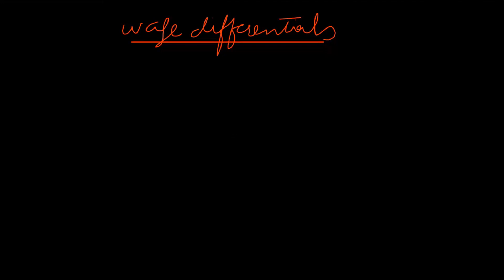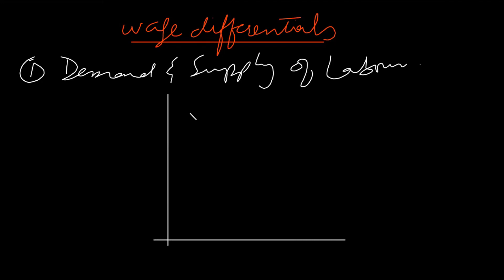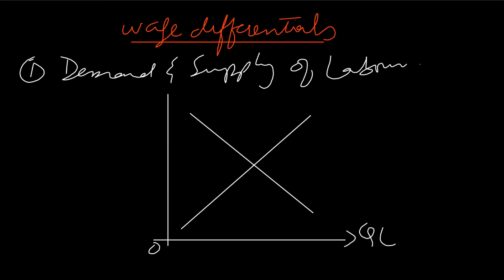Now we'll look at the other factors that cause wage differentials. The first important factor is demand and supply of labor. Demand and supply of labor determines how much wages should be paid to different people. Workers who are in high supply receive low wages, and workers with low supply receive high wages. We can make a graph to explain this scenario and why different people earn different amounts.